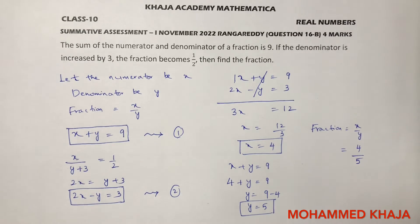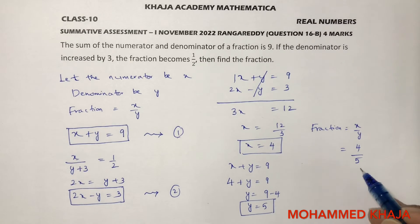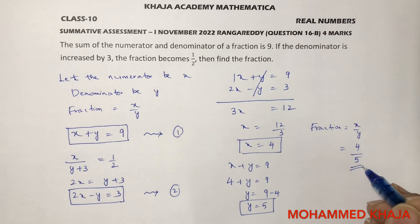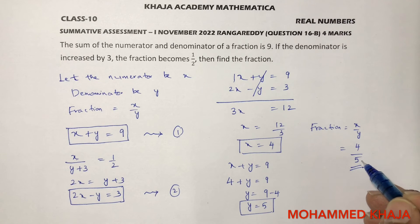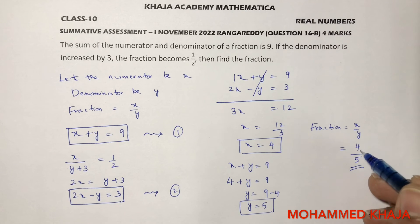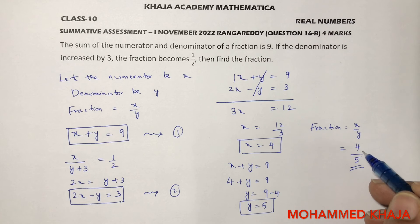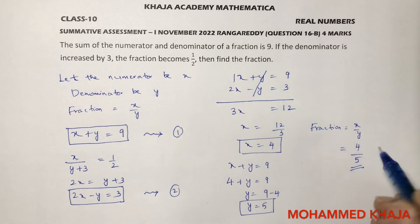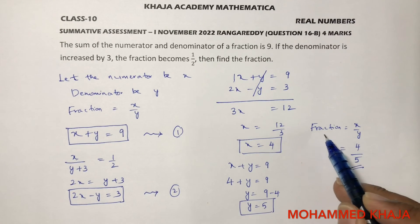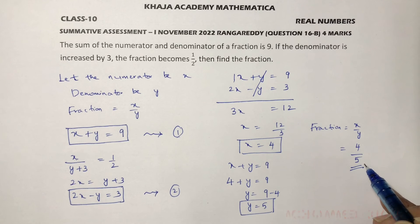So the fraction is 4 by 5. For verification, if the denominator is increased by 3, it becomes 5 plus 3 equals 8, giving 4 by 8. Simplified, 4 by 8 equals 1 by 2. So the correct answer is that the fraction is 4 by 5.